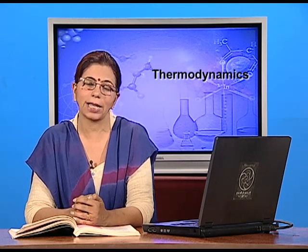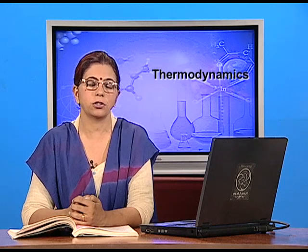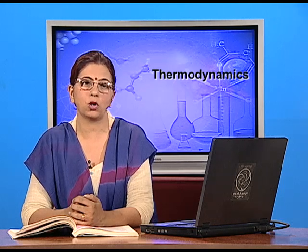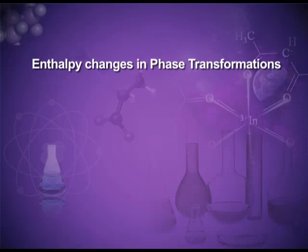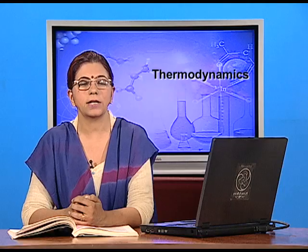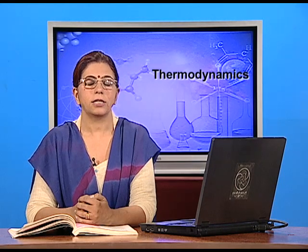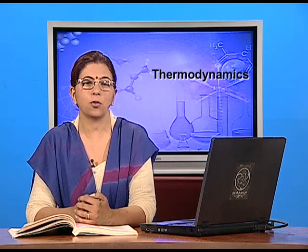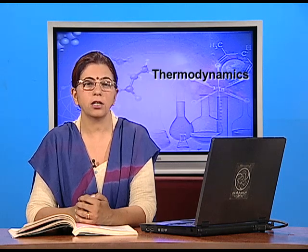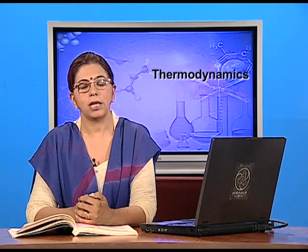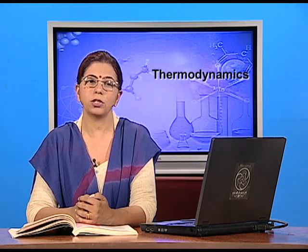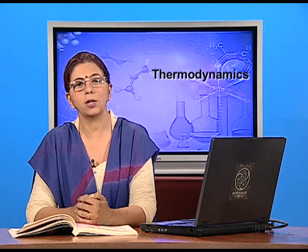Dear students, today I explained that internal energy and enthalpy are related via the equation delta H = delta U + P delta V, where delta H is the heat exchange at constant pressure and delta U is heat exchange at constant volume. I also explained enthalpy changes in phase transformations — the change from solid to liquid or liquid to gaseous state or vice versa — and that the enthalpy of atomization for diatomic and polyatomic molecules is different; for polyatomic molecules we take the mean bond enthalpy. In the next lecture we will study about lattice enthalpy and how to find the lattice enthalpy of an ionic solid using the Born-Haber cycle. Thank you.